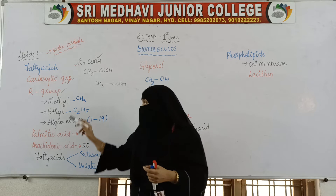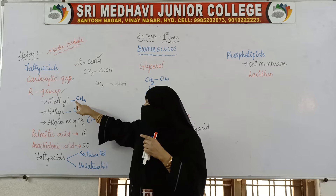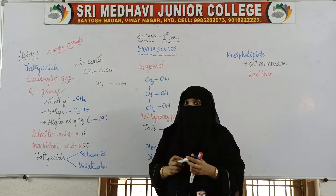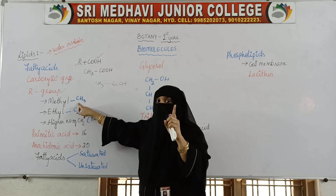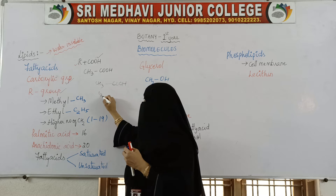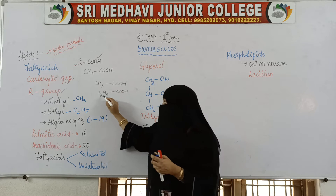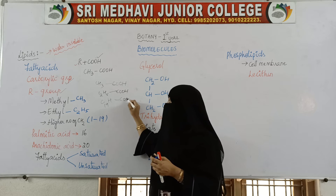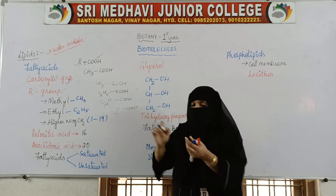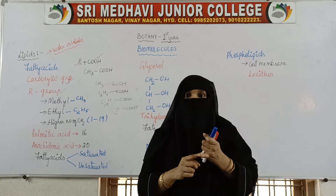If nothing is written, it means only one carbon. The carboxyl group can be attached to a methyl group with only one carbon. If attached to an ethyl group, we write C2H5-COOH. Instead of C2 we can have up to C19, so C15 or C19 with hydrogens attached to a carboxylic group — this is a fatty acid.